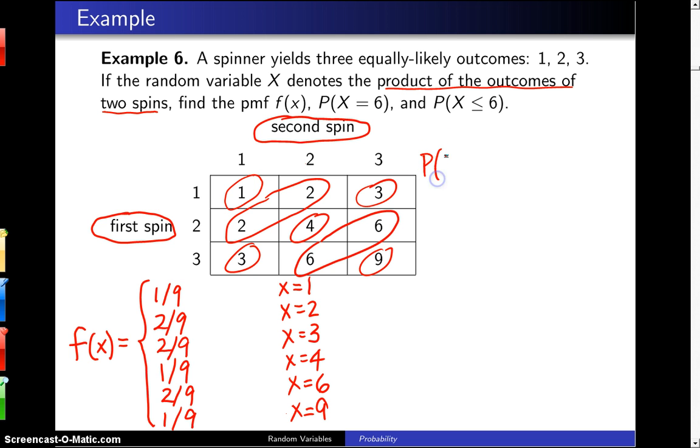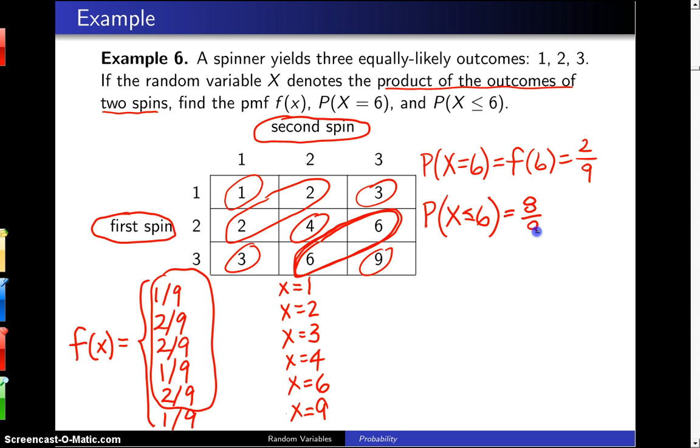The probability that x is equal to 6 corresponds to these two outcomes right here, and that's also f, which turns out to be 2 ninths. To calculate the probability that x is less than or equal to 6, we add up the values of the probability mass function for all values associated with 6 and below. And that total is 8 ninths.